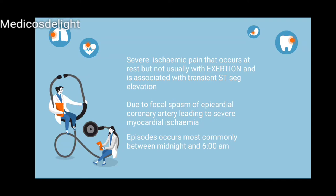The episodes typically occur between midnight and 6 to 8 AM in the morning. Each episode can be described variably by patients — some describe it as just a normal discomfort, some may be woken up from sleep with typical chest pain spreading to the jaw, neck, and left arm, while others might describe it as nausea or heartburn. So symptoms have a range.